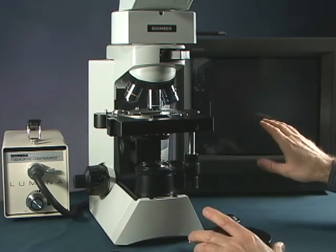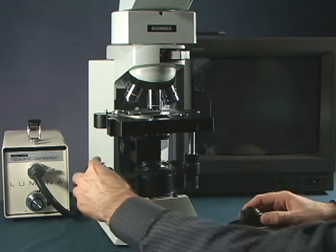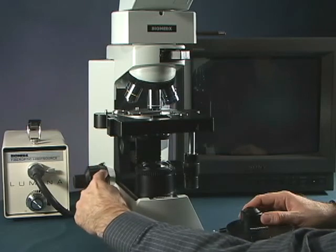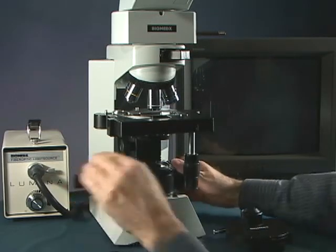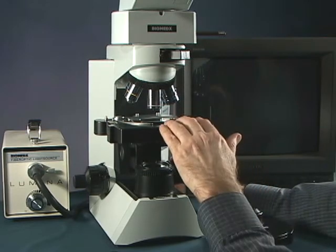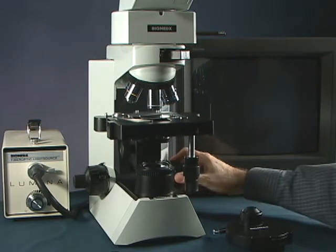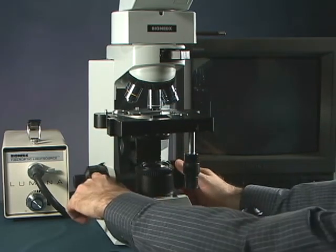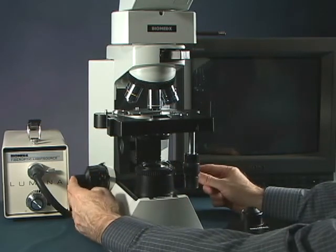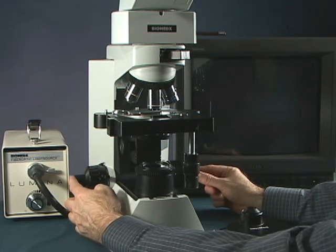Now once your specimen is actually in focus, if you'd like, you can take this stage lock here, pull it down, and then that locks the stage in place. So the next time you put a specimen up in place, you can just rotate it, and it will stop right at the focus point. And you just may need to do a little fine tuning focus with the fine focus knob right here.